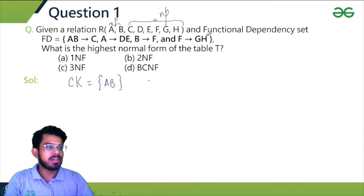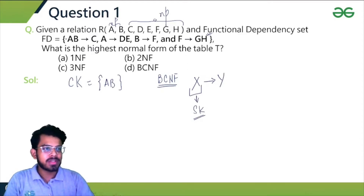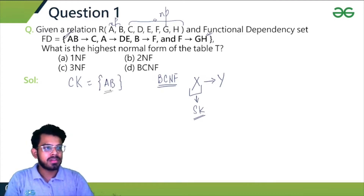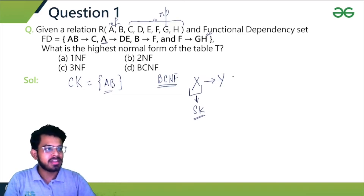Now let's try to find out which normal form this relation is in. For BCNF testing, for every non-trivial functional dependency X to Y, X must always be a super key. Checking the first FD: AB on the LHS is a super key, so it satisfies BCNF. But for the next FD, A→DE, A is not a super key at all, so this functional dependency doesn't satisfy the property to be in BCNF. The relation is not in BCNF.